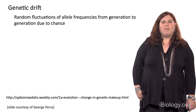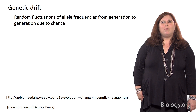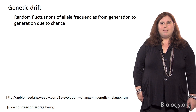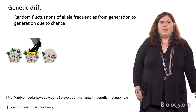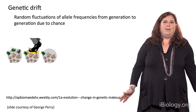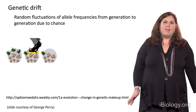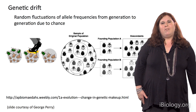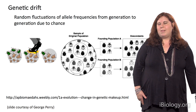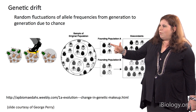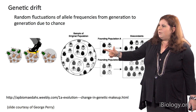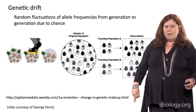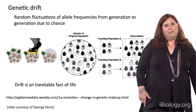Allele frequencies also change over time due to genetic drift, defined as random fluctuations of allele frequencies from generation to generation simply due to chance. Sometimes things happen — like bugs getting squashed — that change allele frequency in the next generation. For example, with ladybugs, just by chance we might see more with dark colors or with medium colors in the next generation. Drift is just an inevitable fact of life.